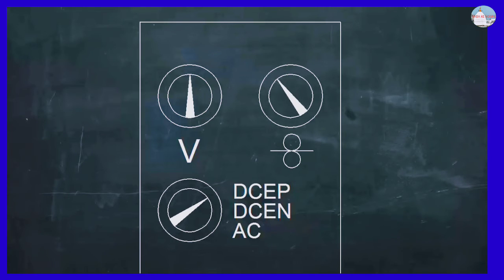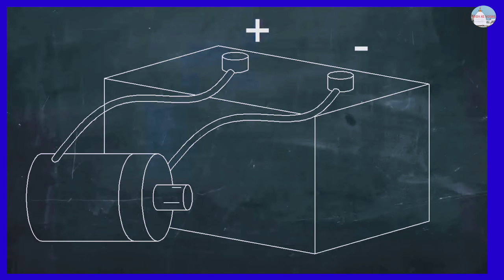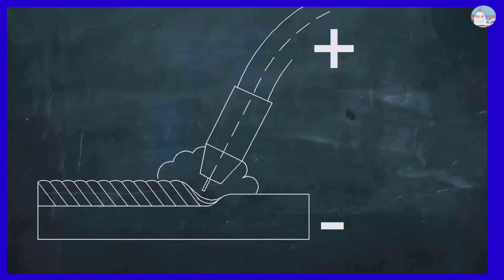For most MIG welding, the current is direct current or DC. DC is like the current flowing from a car battery. One wire is always the negative and one is always positive. In DC MIG welding, the electrode is usually positive and the workpiece is negative.